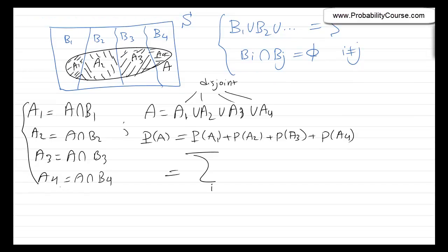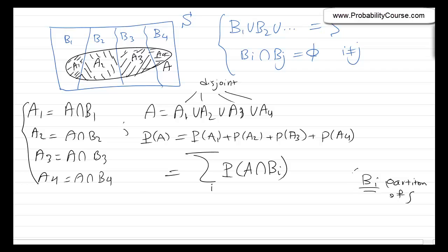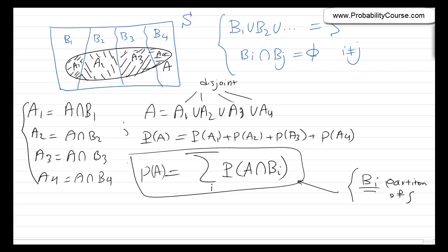This is a summation. Remember, Ai is equal to A intersection with Bi. So this is the summation over i of probability of A and Bi. So that's the rule: if Bi's are a partition of sample space S, then the probability of any event A can be written as the summation of probability of A intersection with Bi.